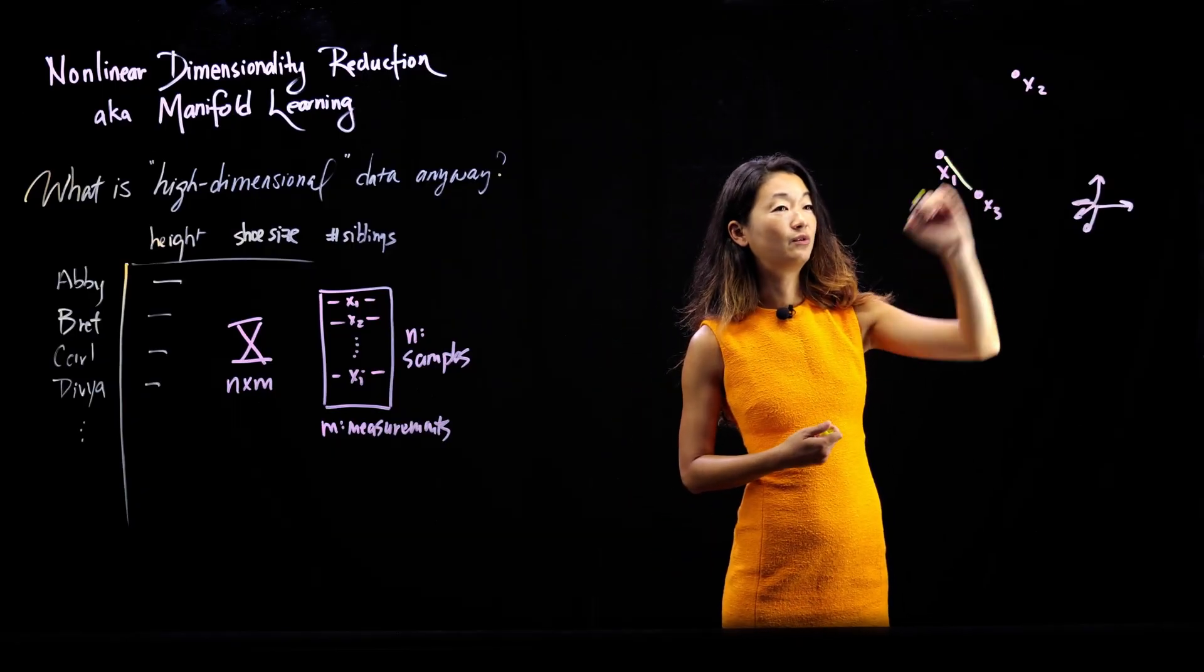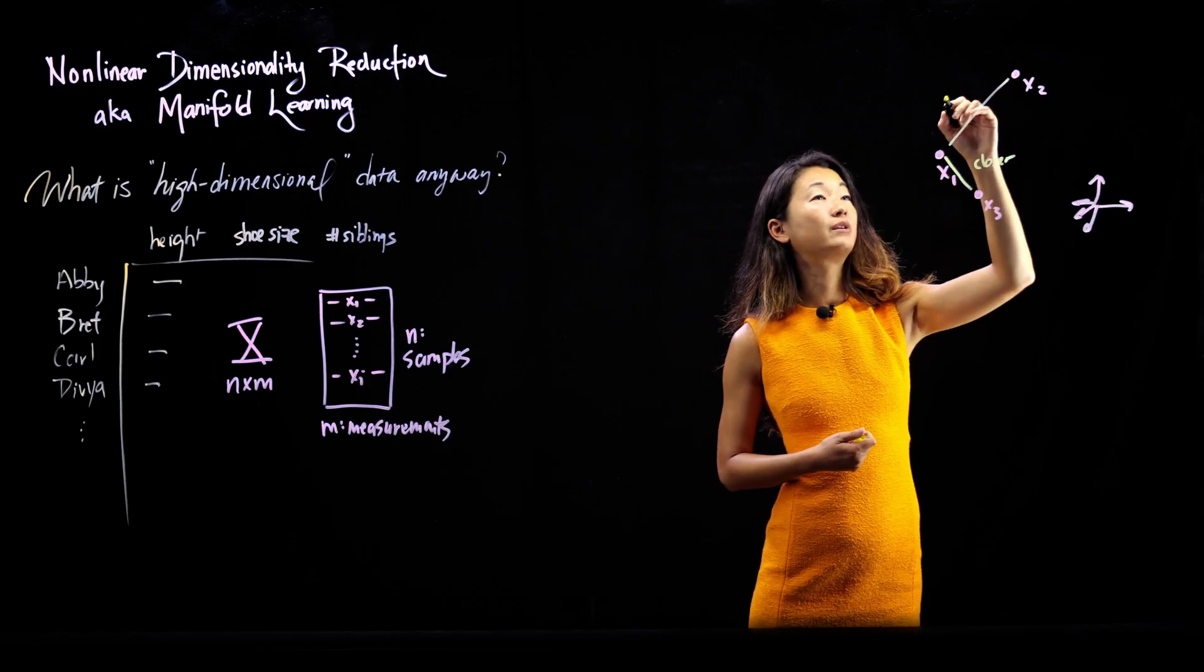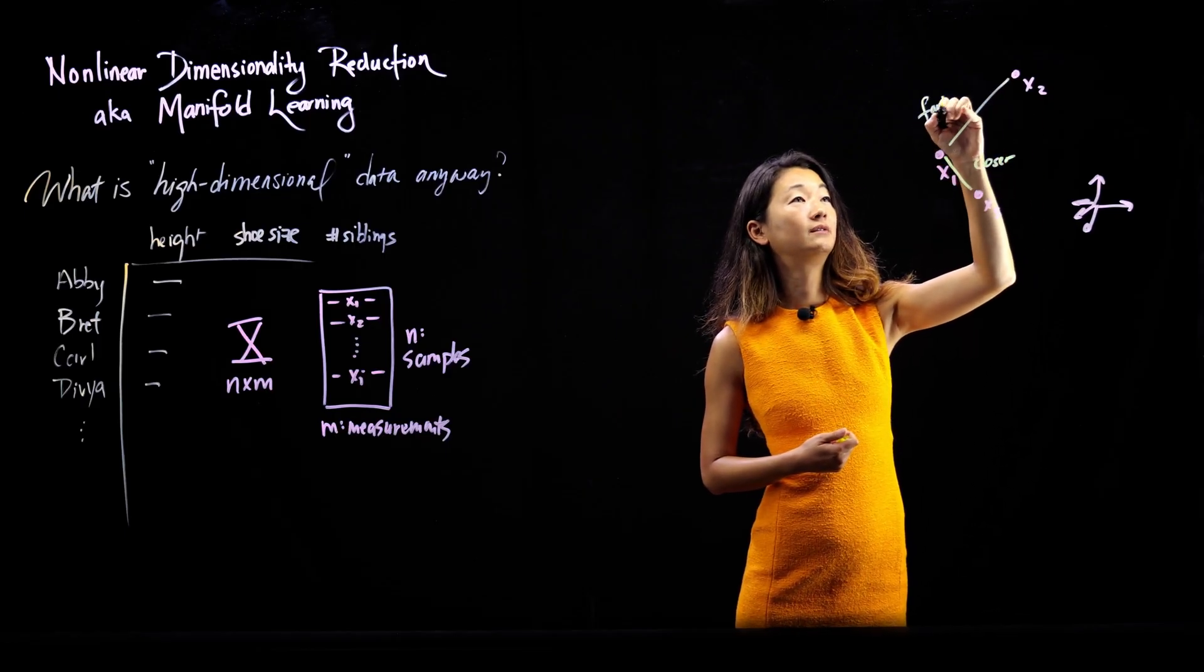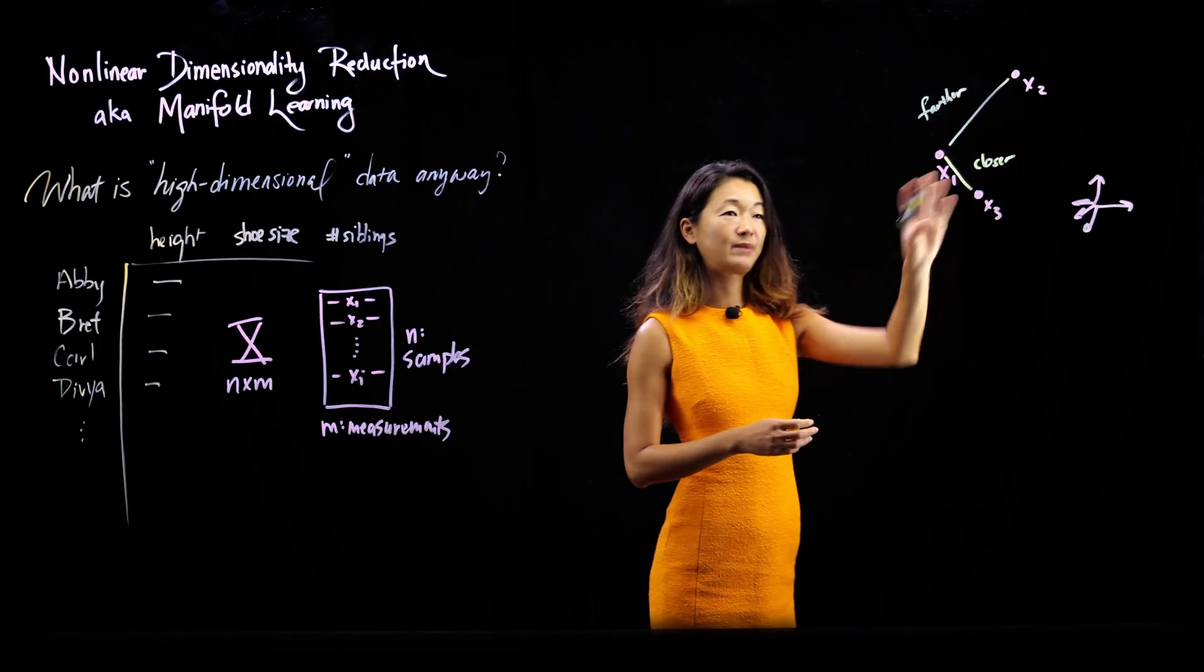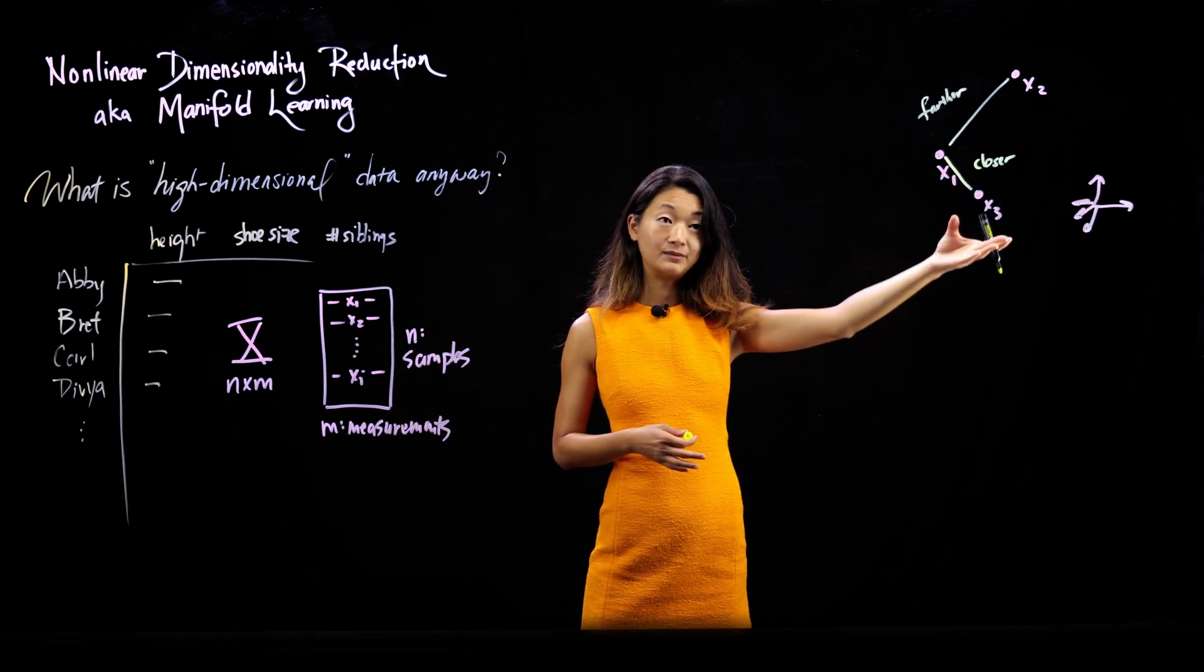So for example, these two points are closer, and those two points are farther away. Now you can see this by looking at it, but how do we actually quantify this? We need to be able to put numbers on these distances, right?